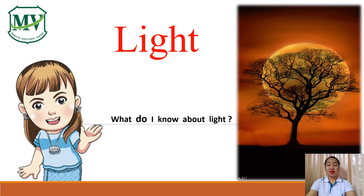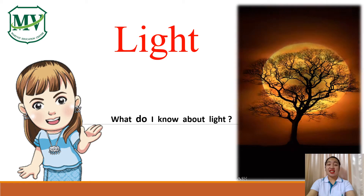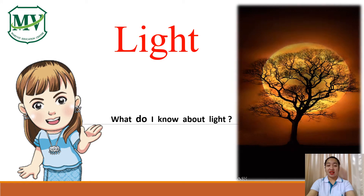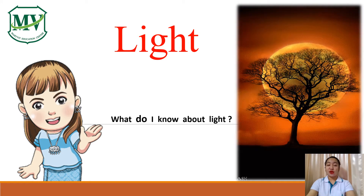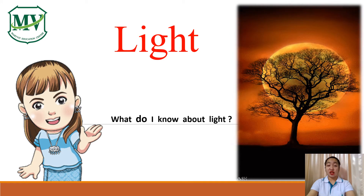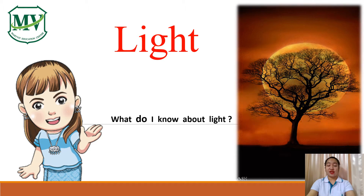For a quick review from our last topic, what do you know about light? Light enables us to see things around us. Also, there are different light sources aside from our sun such as torch, lamp, candle, stars, and fire.